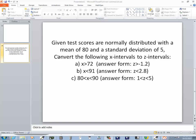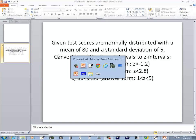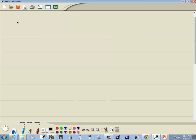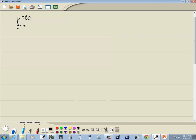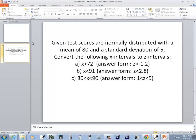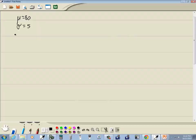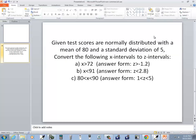Let's take a look at this problem. Given test scores are normally distributed with mean of 80 and standard deviation of 5, convert the following x-intervals to z-intervals. So for part a, we got x is greater than 72. Part b, we got x is less than 91. And part c, we got 80 is less than x is less than 90.